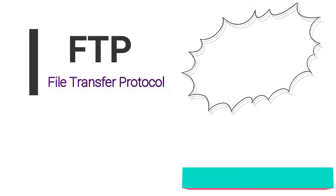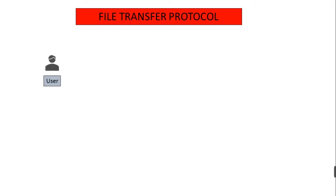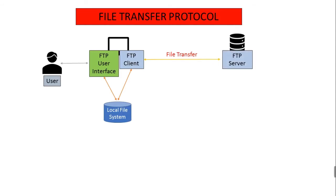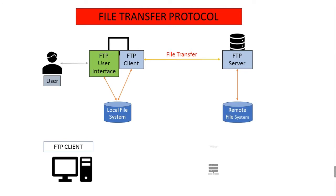HTTP and FTP are both file transfer protocols and have many common characteristics. They run on top of TCP. However, FTP uses two parallel TCP connections to transfer a file: a control connection and a data connection. The control connection is used for sending control information between the two hosts, such as user identification, password, commands to change remote directory, and commands to put and get files.